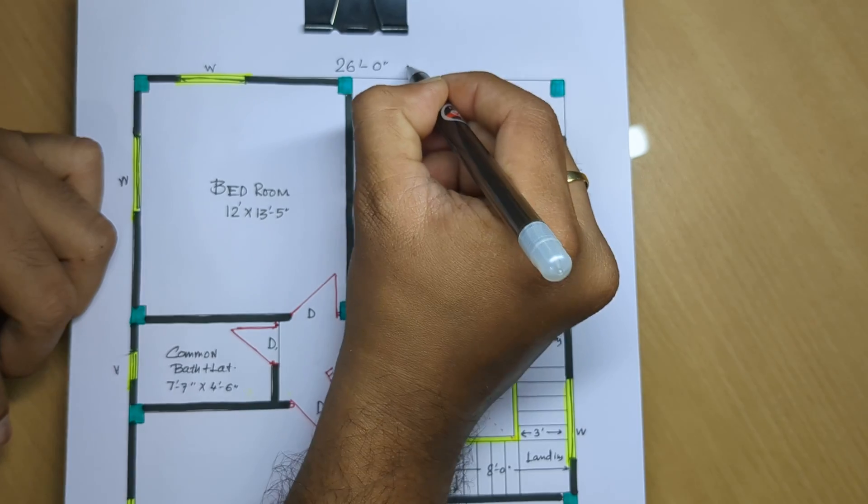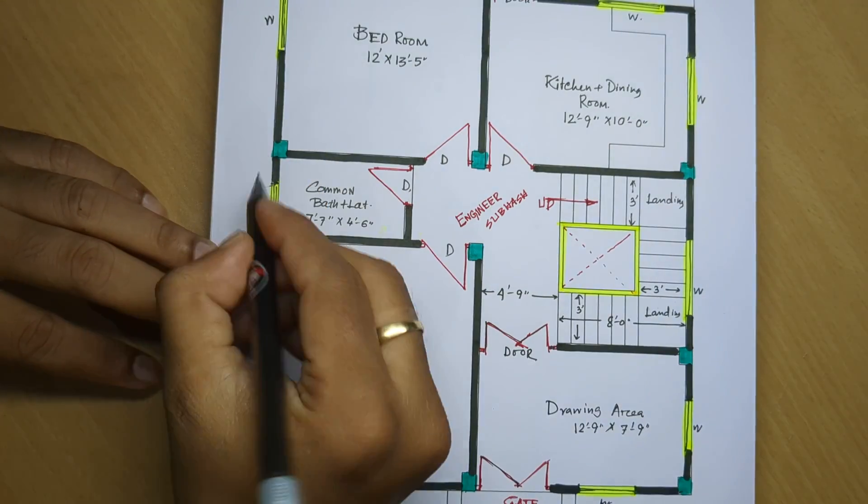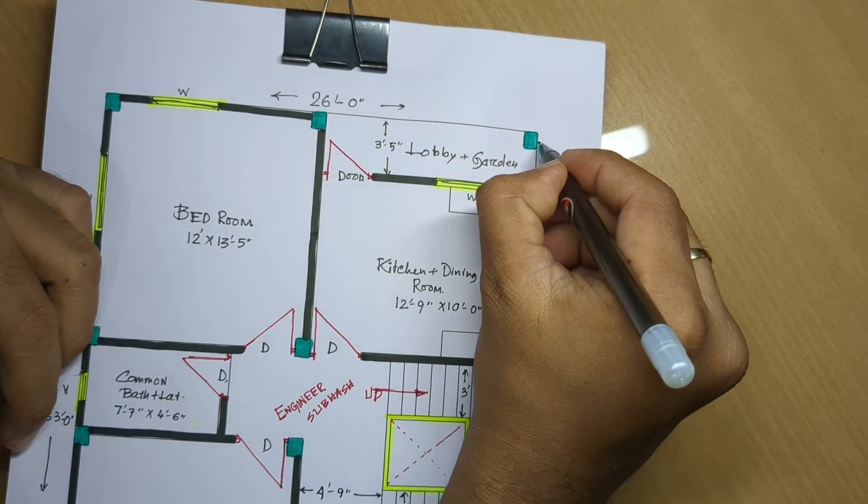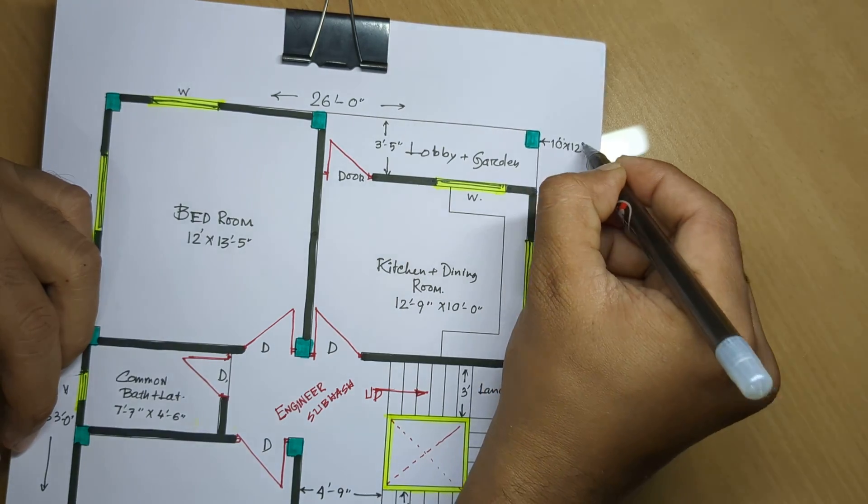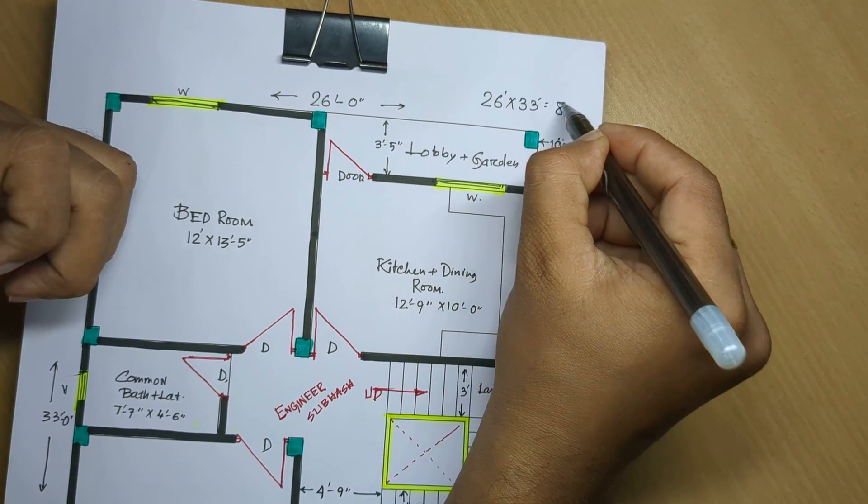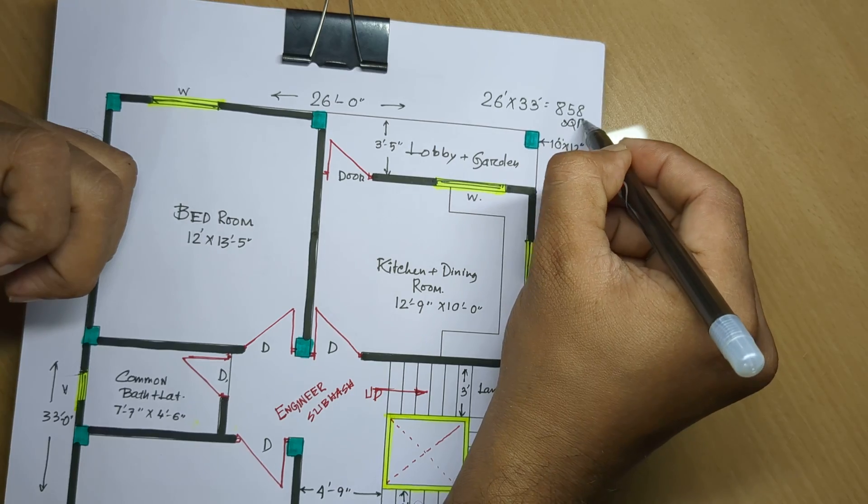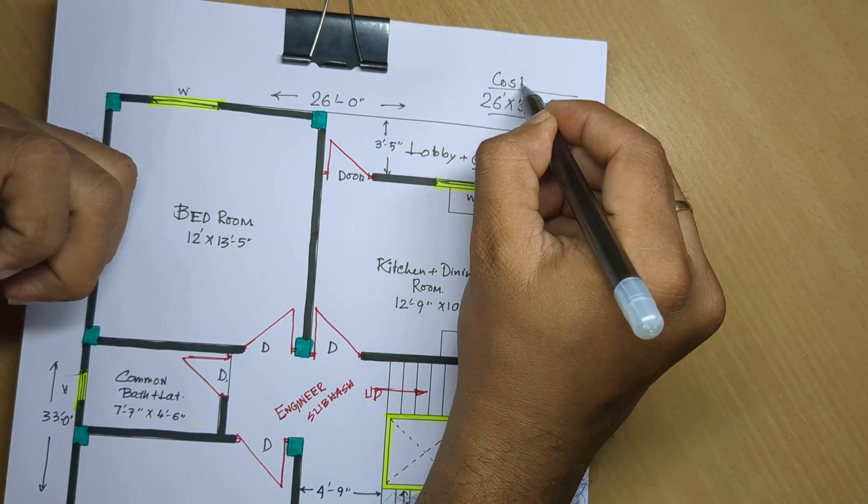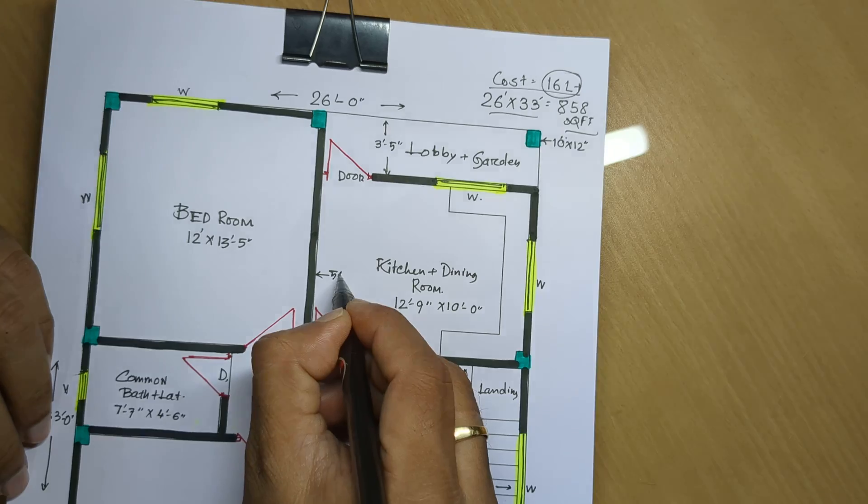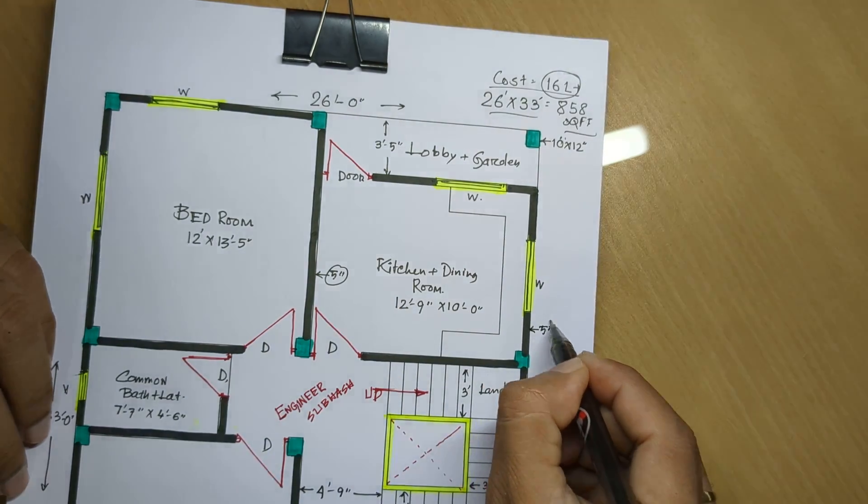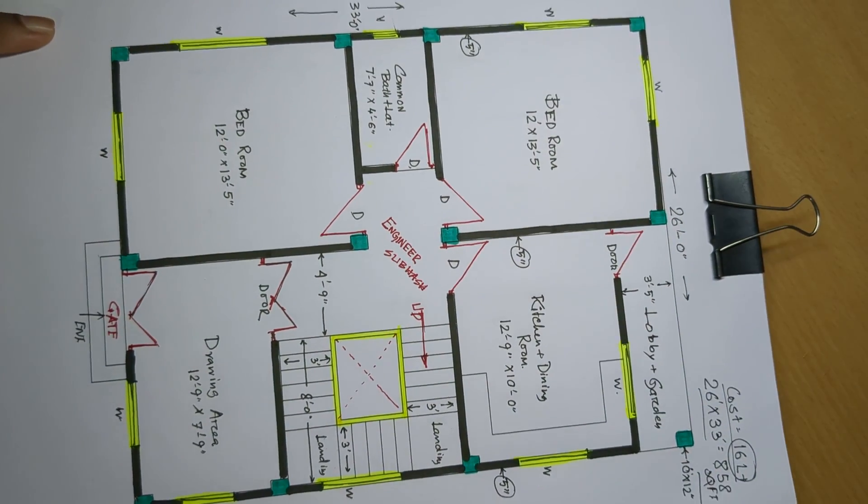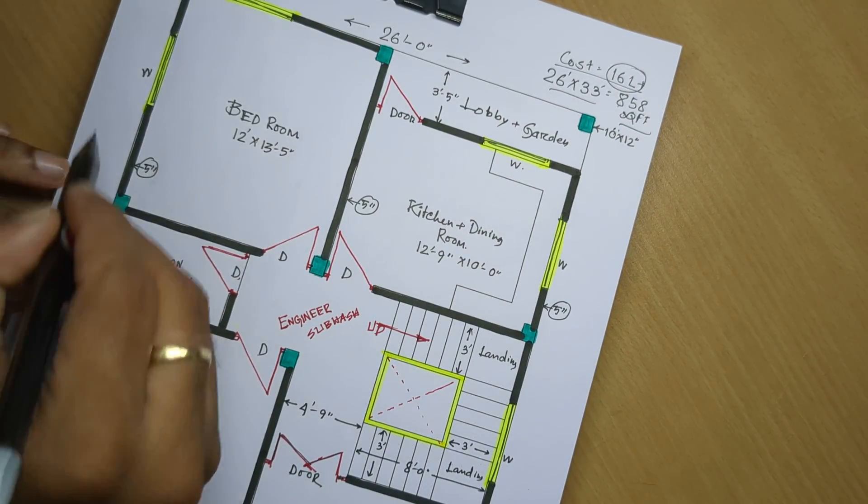Total measurements are 26 feet 0 inches and 33 feet 0 inches, with columns 10 by 12 inches. 26 into 33 feet equals 858 square feet total. Cost includes 16 pieces with five inch walls.